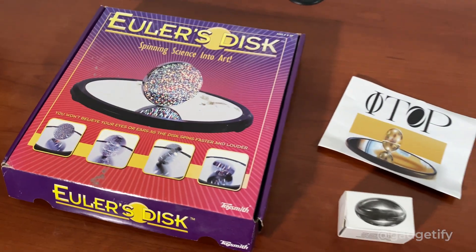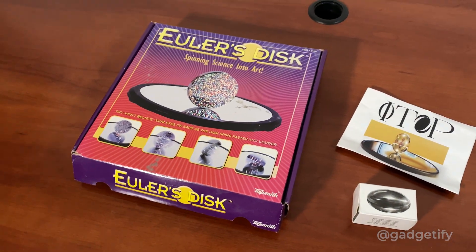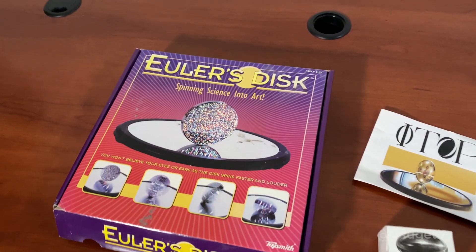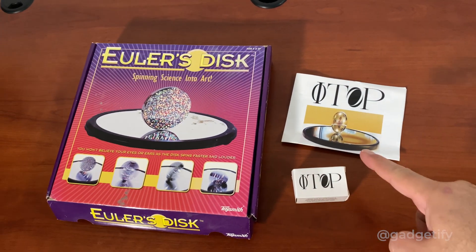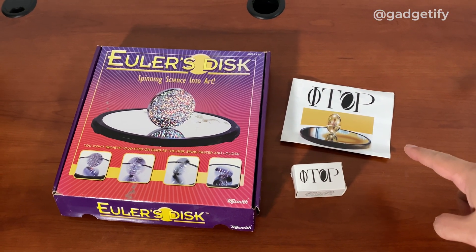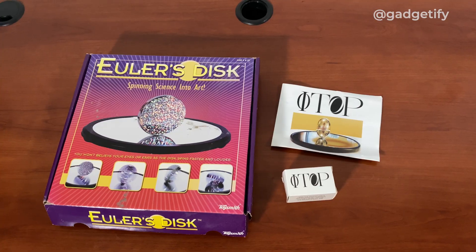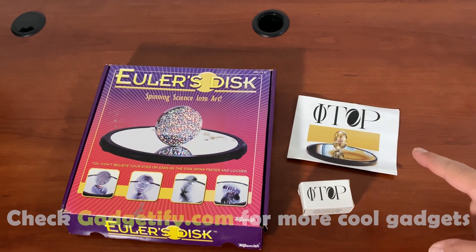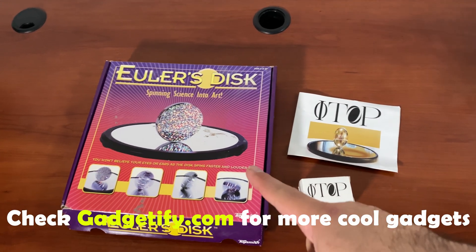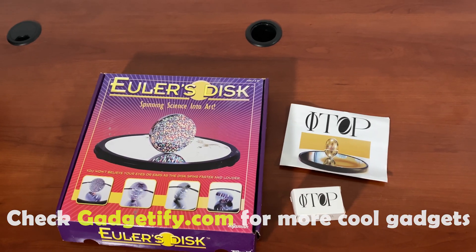Hey everybody, today I'm showing you two cool desk toys that put on a show when you spin them. This is the Euler's disc and this is the Phytop. This is something that you can use for the Tesla's Egg of Columbus experiment which when you spin fast enough it will stand like this.